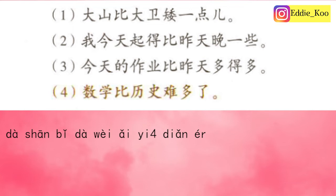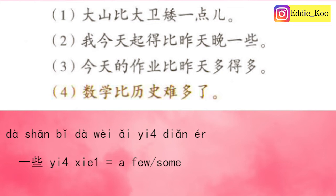The alternative way to say the sentence is to replace 一点 with 一些. At the beginning of the lesson we said there are two ways to express 'a little': 一点 and 一些. So the sentence becomes 大山比大卫矮一些, which also means 大山 is a little shorter than 大卫. By the way, 一些 literally means 'a few' or 'some', but in this sentence structure it equals 一点, meaning a little.